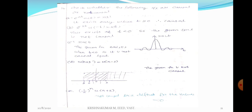u(n+3) is equal to 1 when n+3 greater than or equal to 0, that means n greater than or equal to minus 3. u(n-2) is equal to 1 when n-2 greater than or equal to 0, that means n greater than or equal to 2. u(-t) is equal to 1 when minus t greater than or equal to 0, that means t less than or equal to 0.